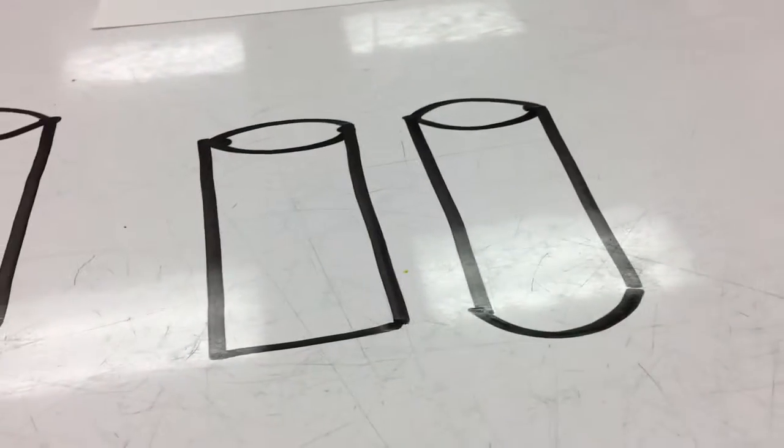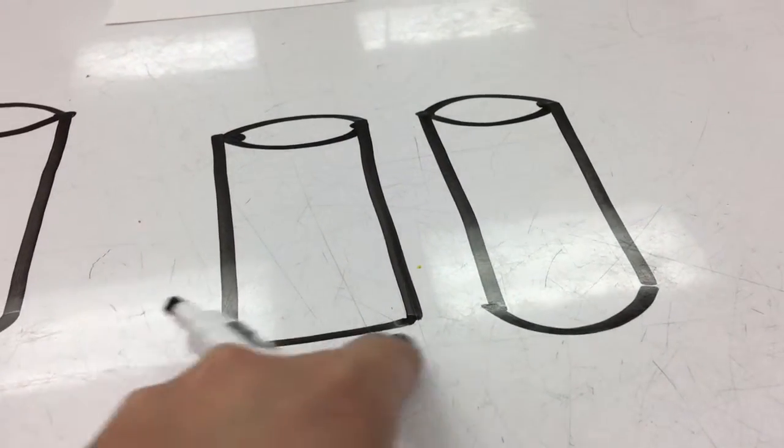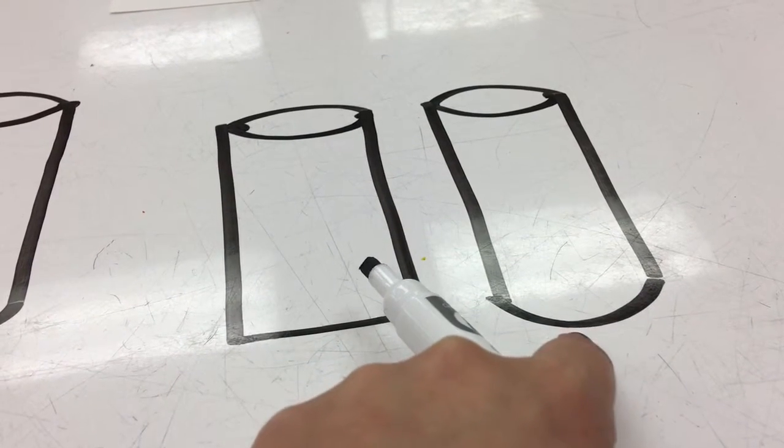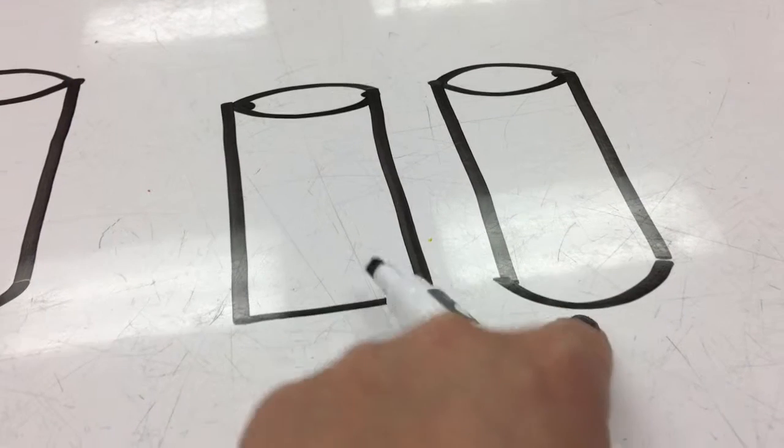One looks way more three-dimensional than the other. With this flat bottom, our brain isn't reading this as a cylinder. With this curved bottom, our brain goes, oh hey, that's a cylinder. That's a three-dimensional form.